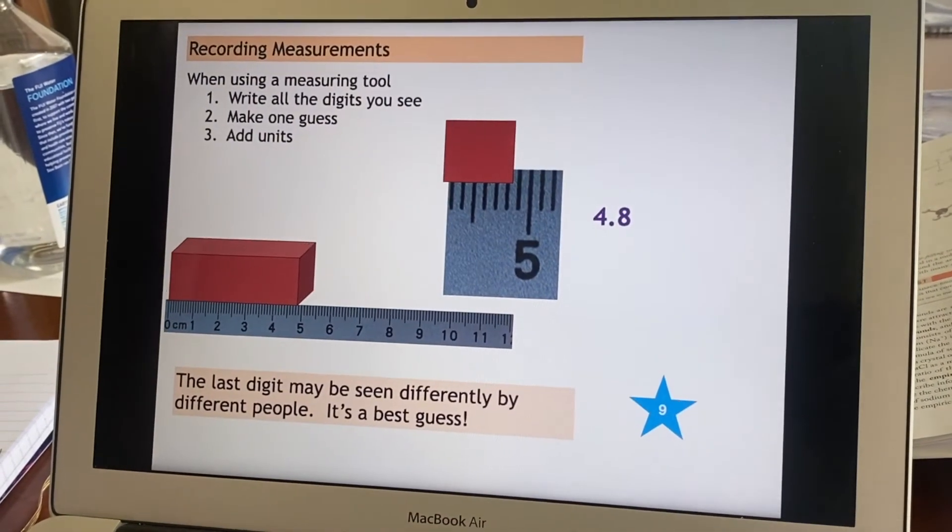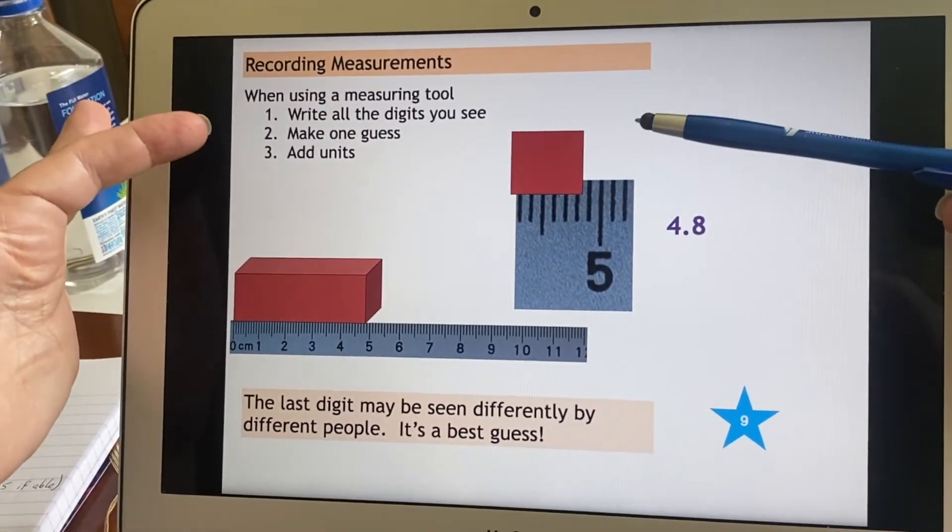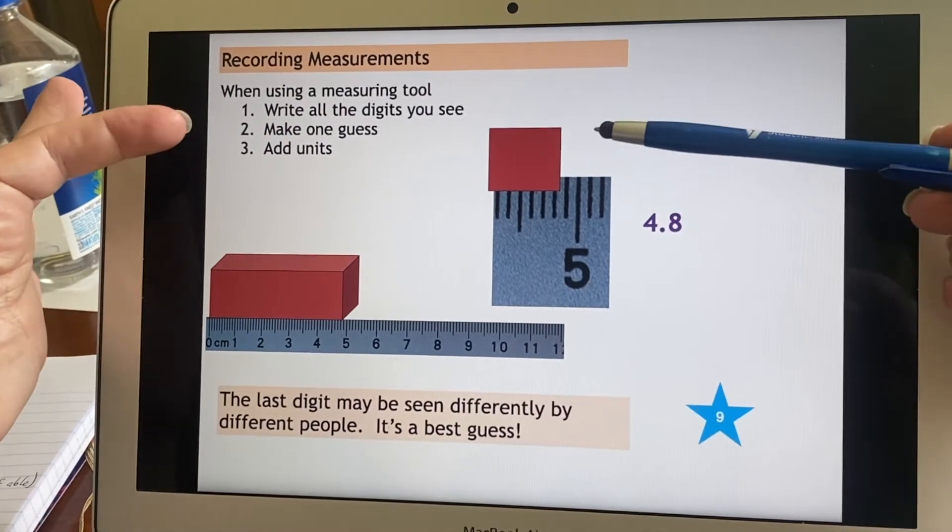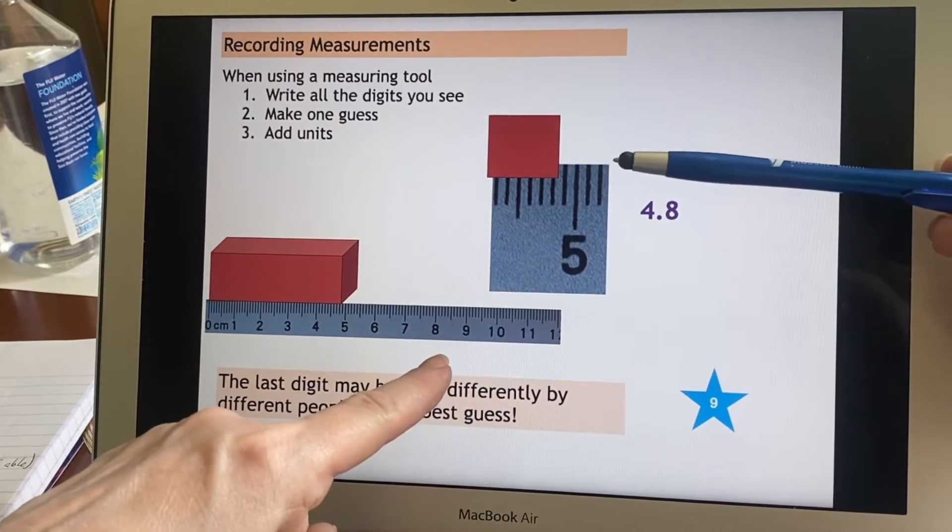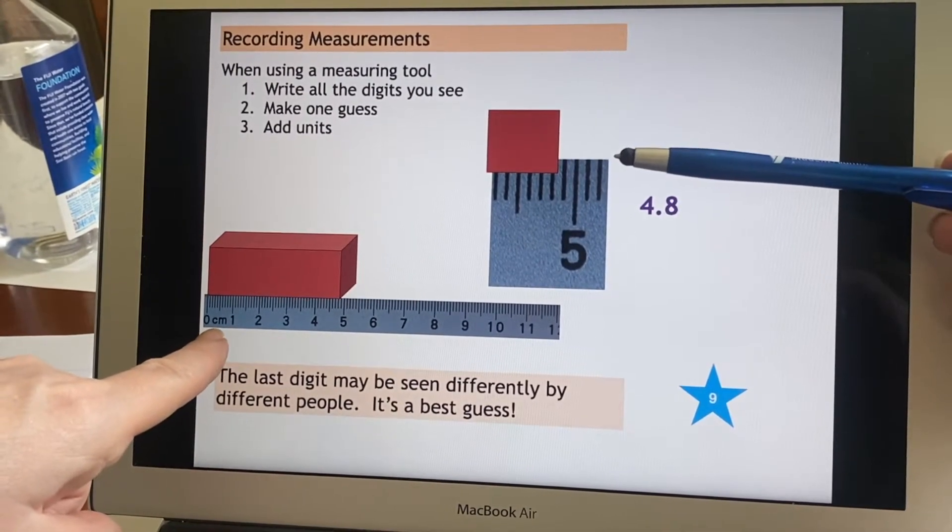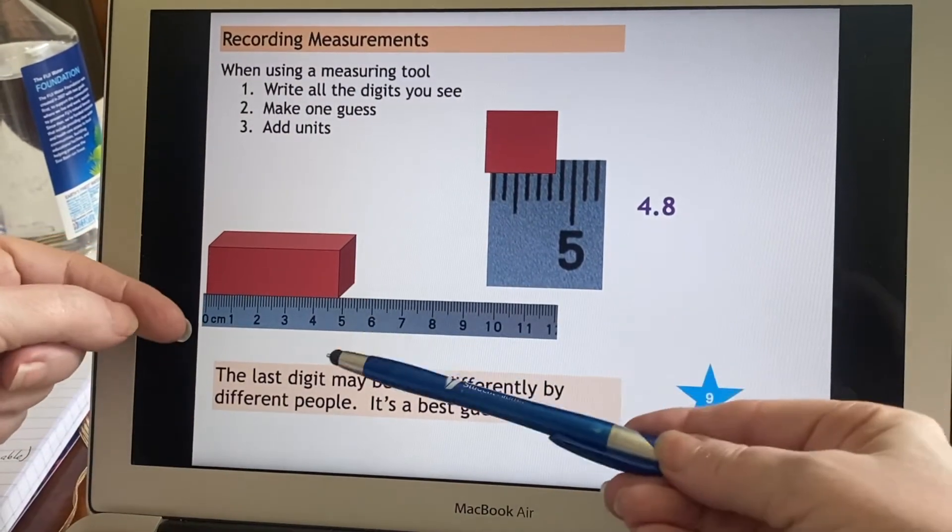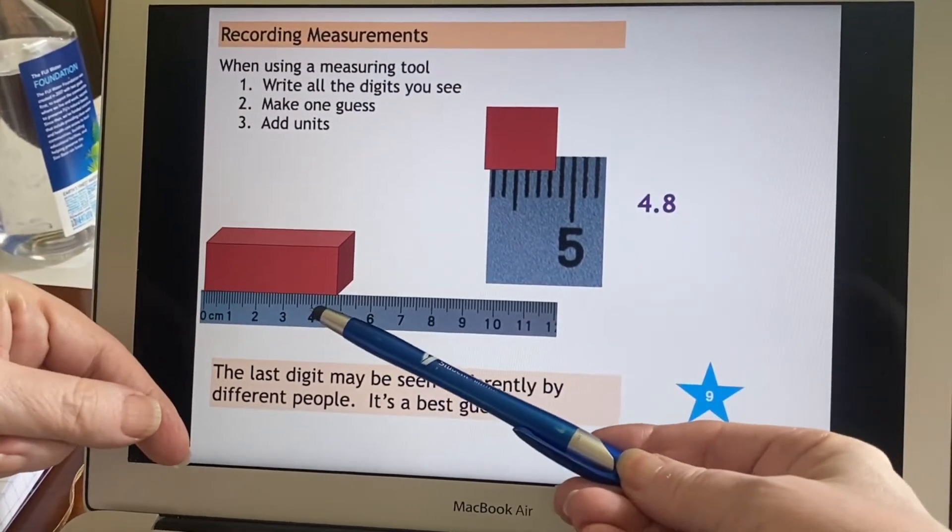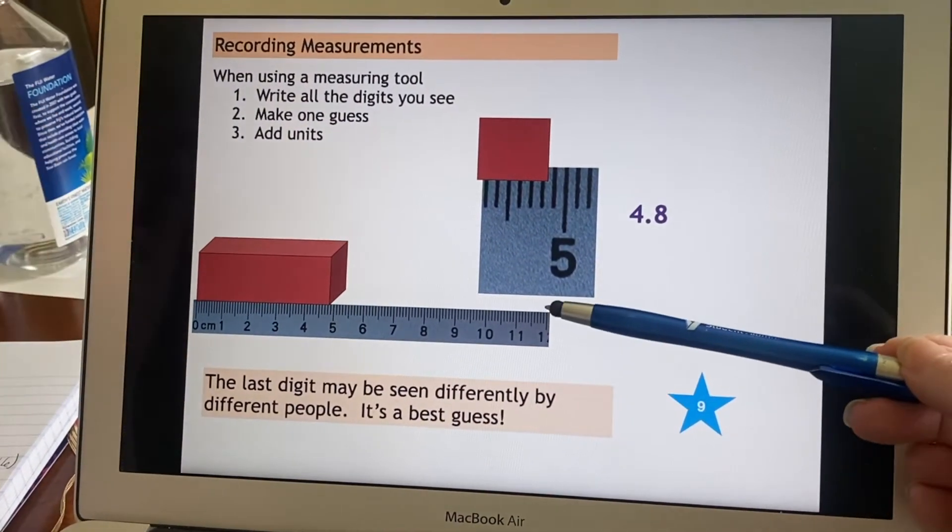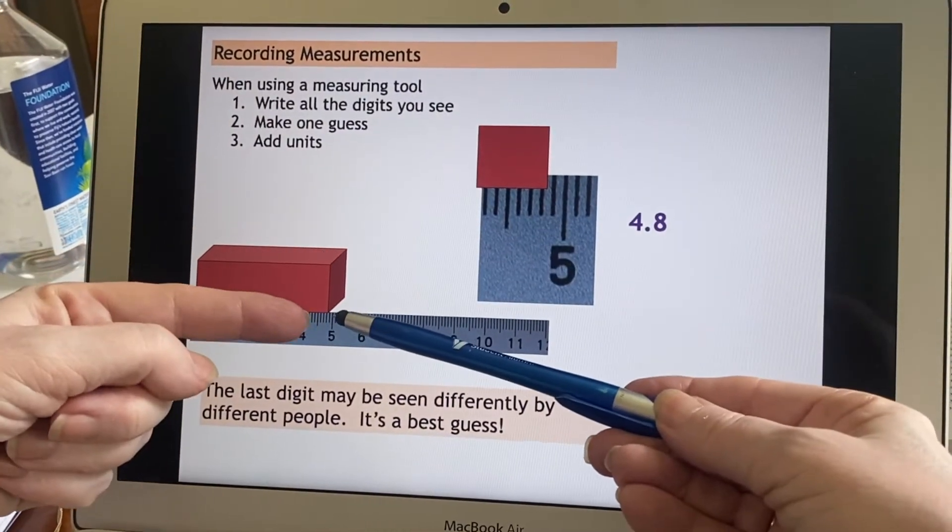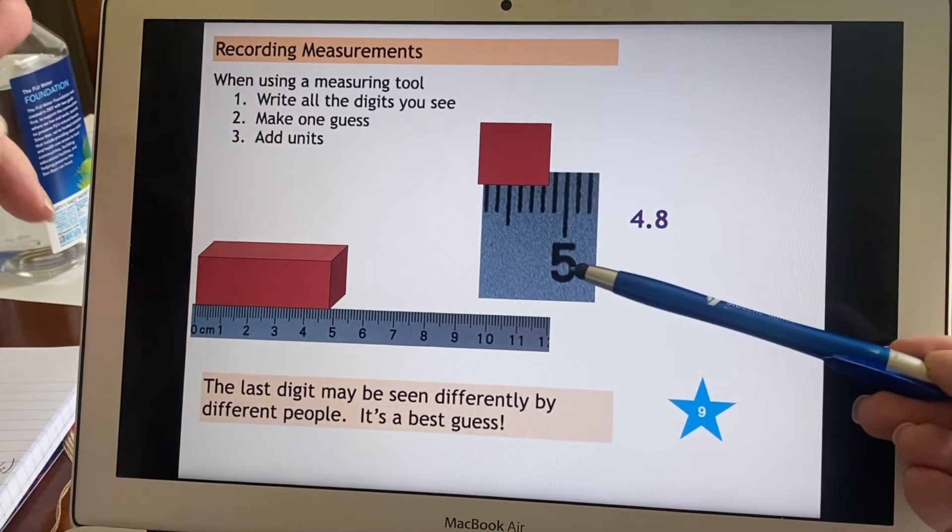So here is an example. You're going to use a tool. You're going to write down all the digits that you actually see. And then you add one guess and make sure that you write down your units. So here is a block. Someone has put a ruler next to it. The ruler is in centimeters. So the large numbers are in centimeters. Well, the person looks at it casually and they see that it's more than four, but less than five. That lets them write down the four.